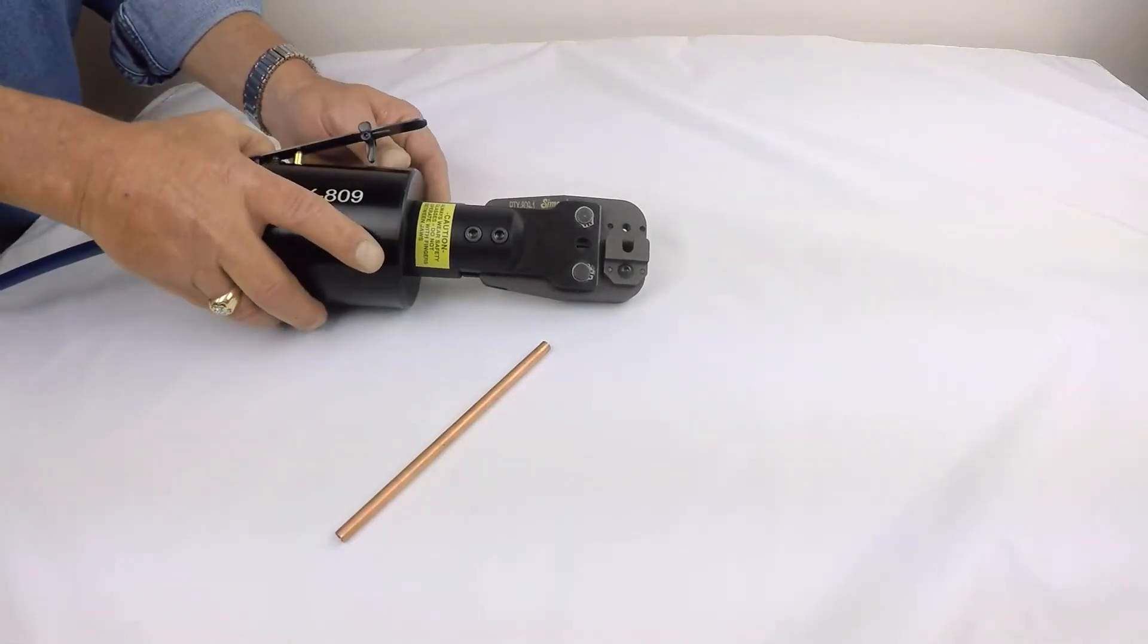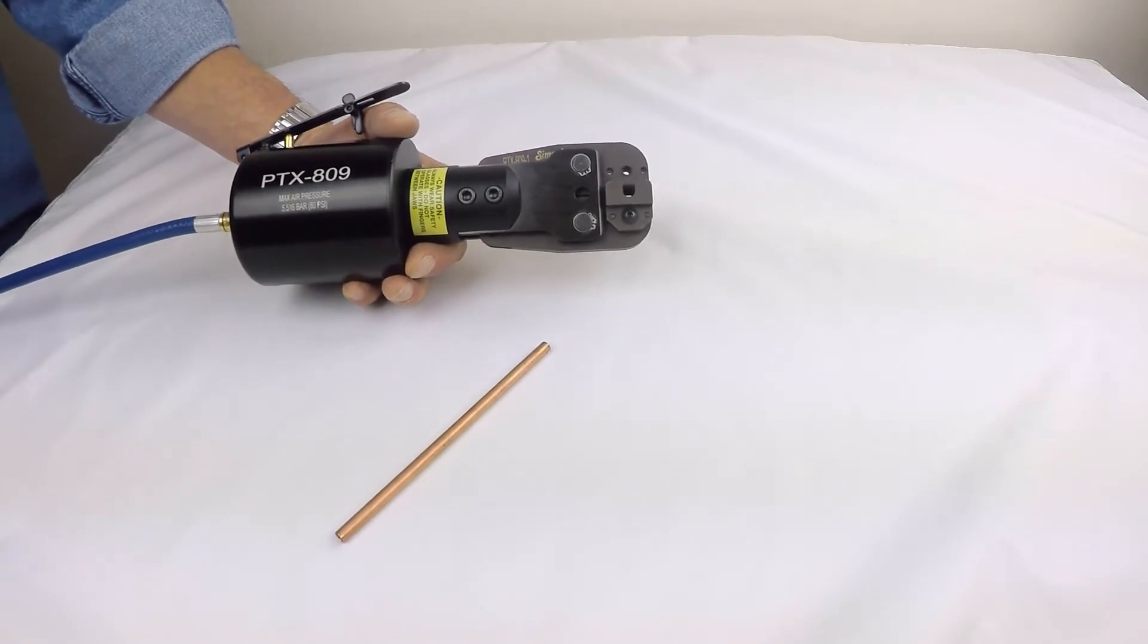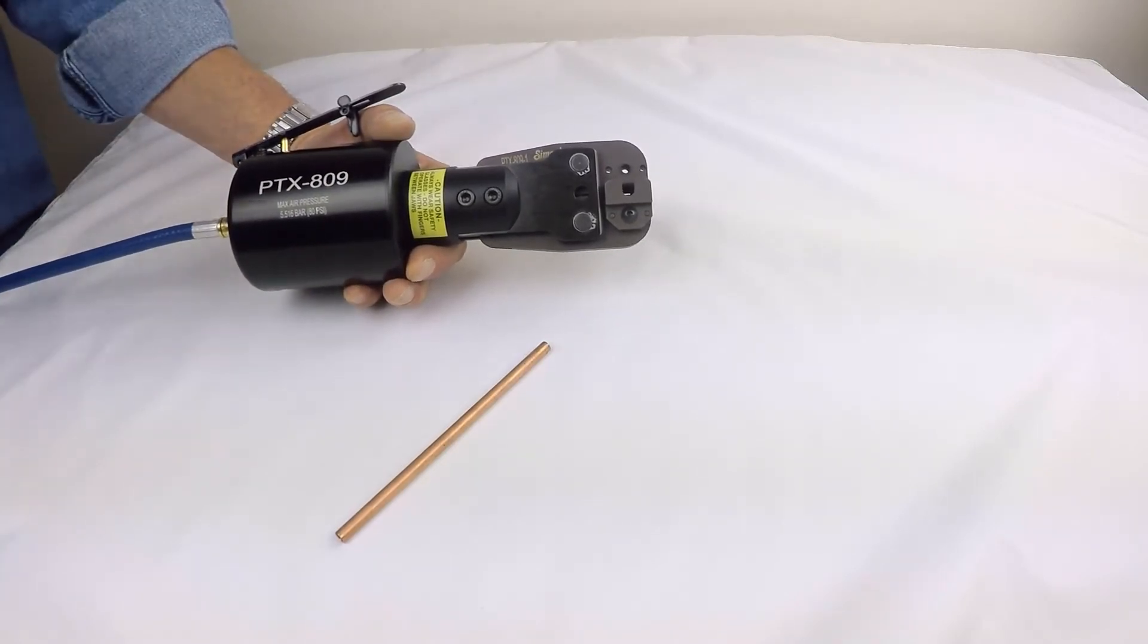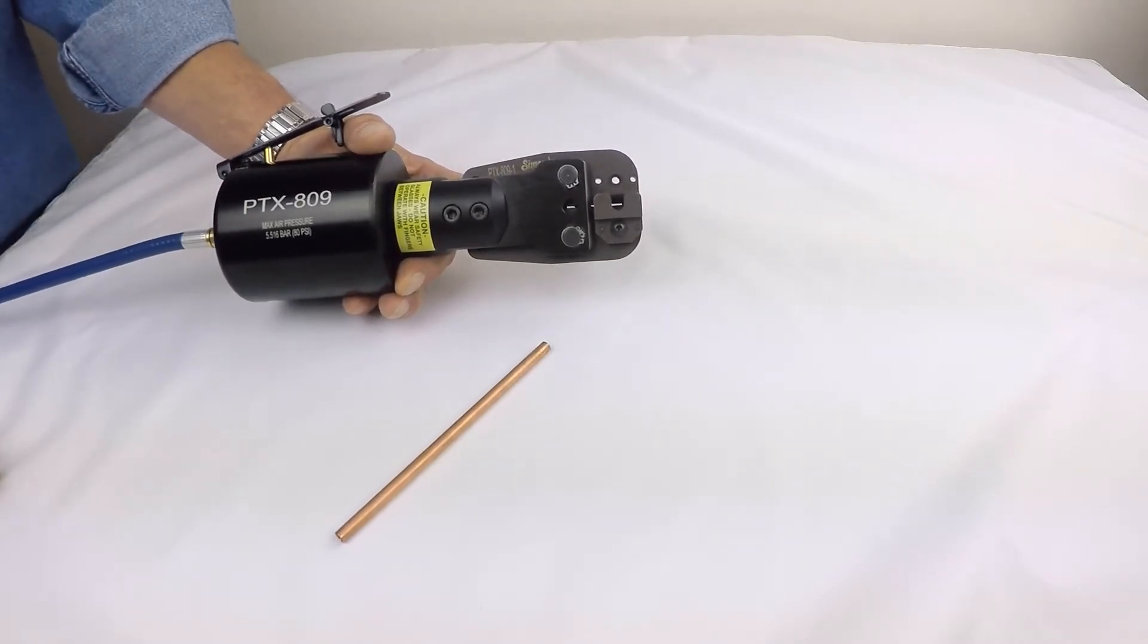This is the PTX 809 crimp tool for the refrigeration industry. This is a tool that crimps the tubing to stop flow of the refrigerant while the technician is sealing it by brazing or soldering.